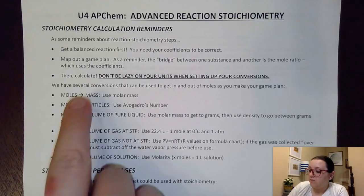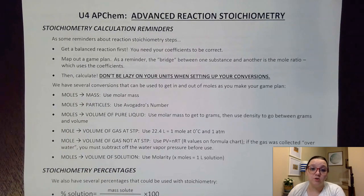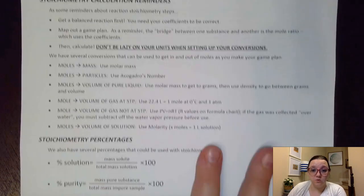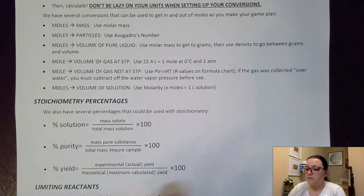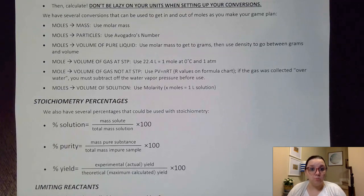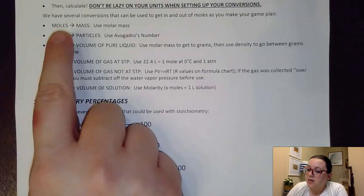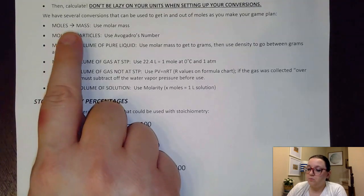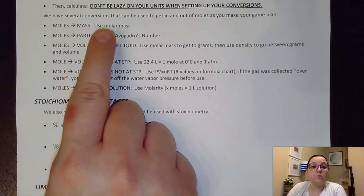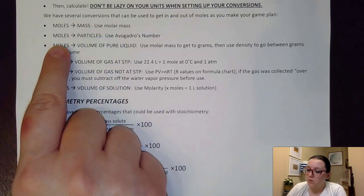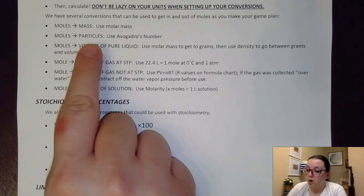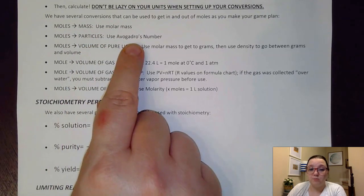We have a list of different types of conversions we could use with these problems. Obviously, if we're going between moles and moles, we would use a mole ratio — that's the one step you would always have in these problems. If we're going between moles and mass, we would use the molar mass. If we're going between moles and particles, we would use Avogadro's number.